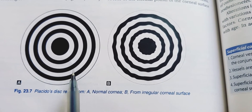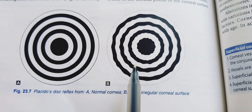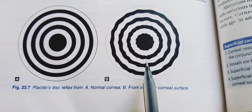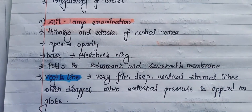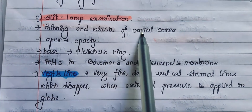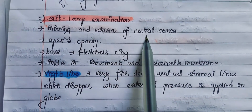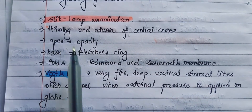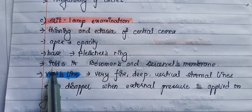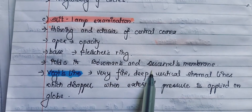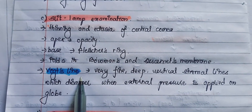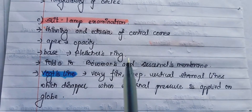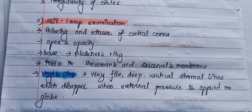This shows the image formed in a normal cornea versus that formed in an irregular corneal surface. On slit lamp examination, there is thinning and ectasia of the central cornea. The apex has opacity. The base of the cone has a Fleischer's ring. There are folds in Descemet's membrane and Bowman's membrane, and Vogt's lines may be seen — these are very fine, deep, vertical stromal lines which disappear when external pressure is applied on the globe.